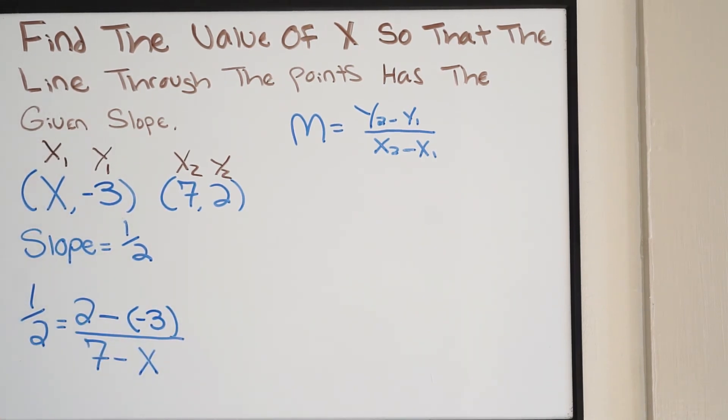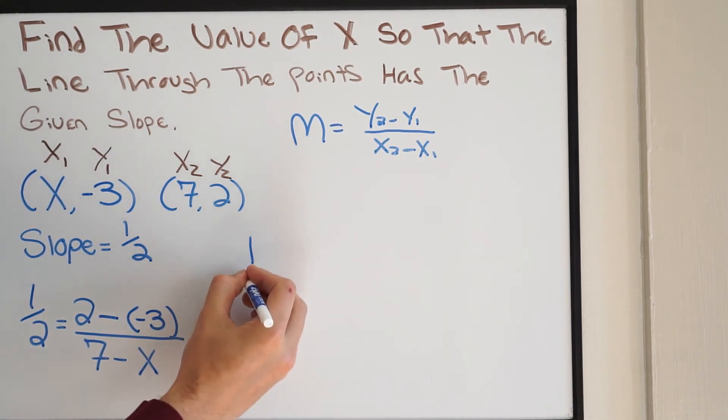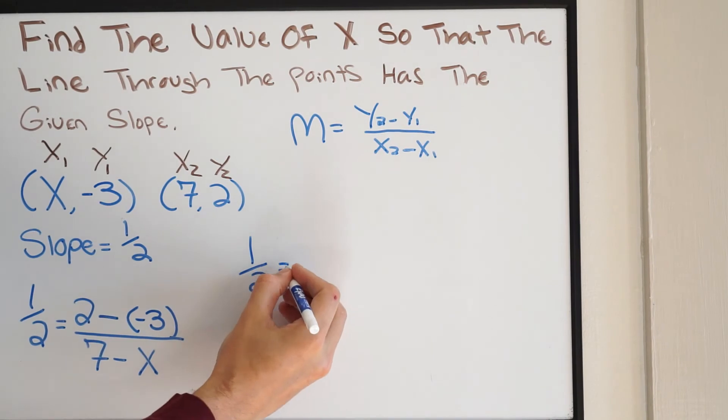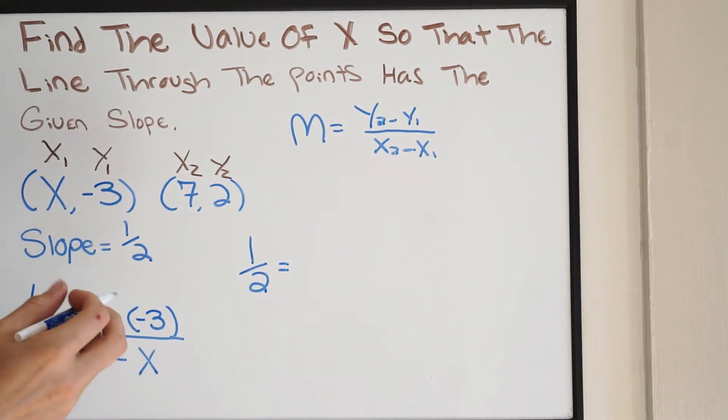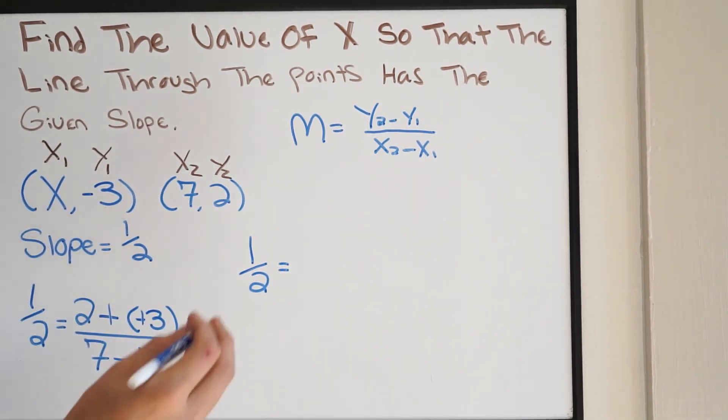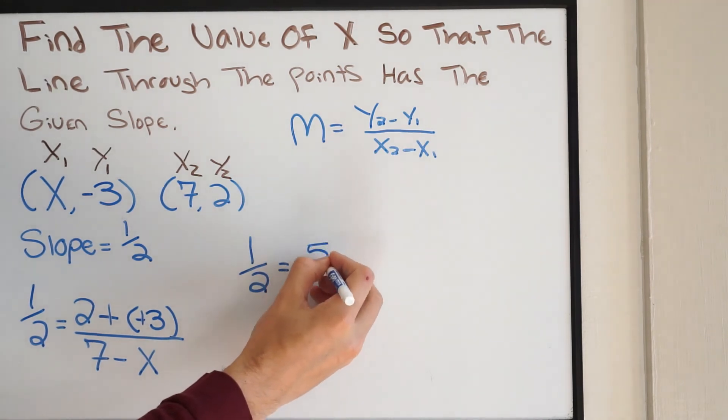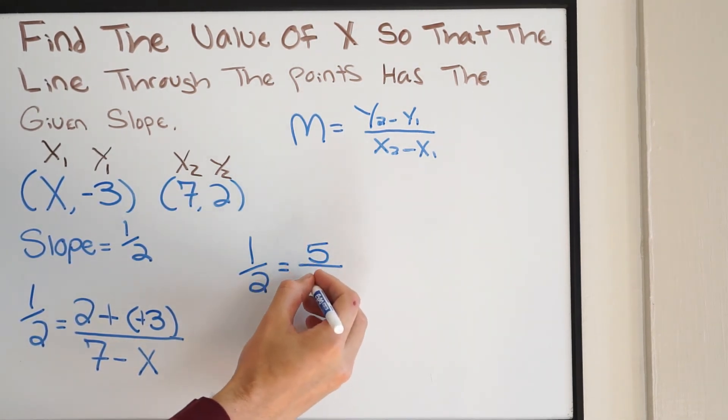Let's go ahead and clean up our numerator. So again, I'm just going to write it right here. We'll have a half equal to, so again, 2 negatives here will make a positive. So we get 5 over 7 minus x.